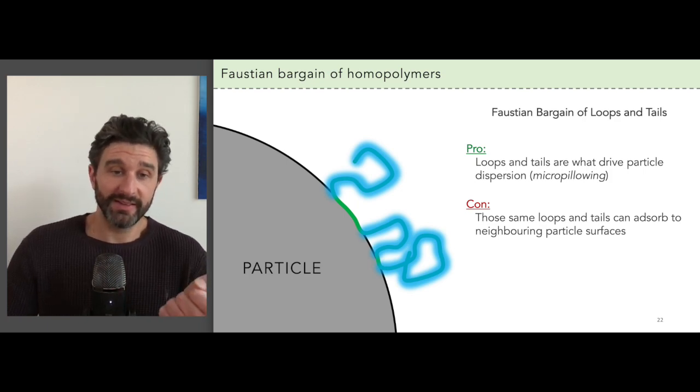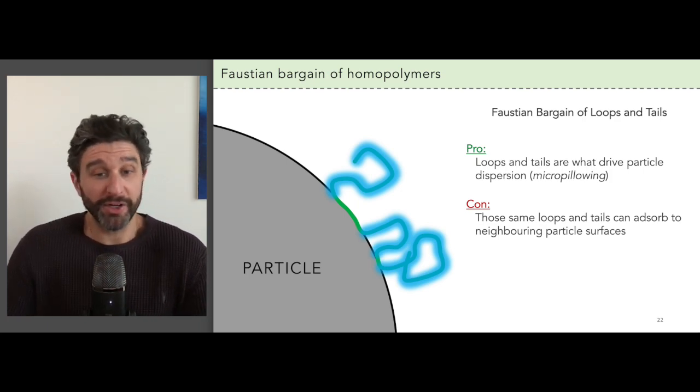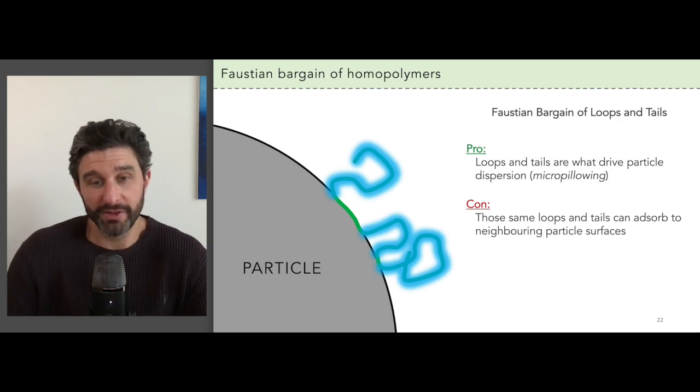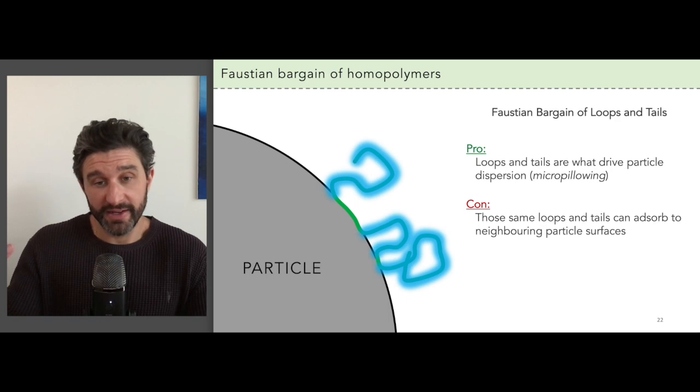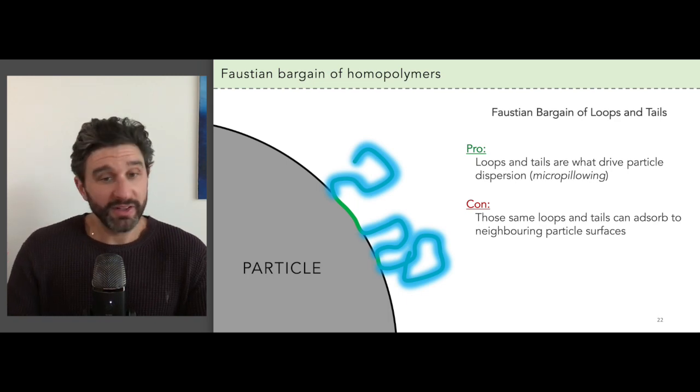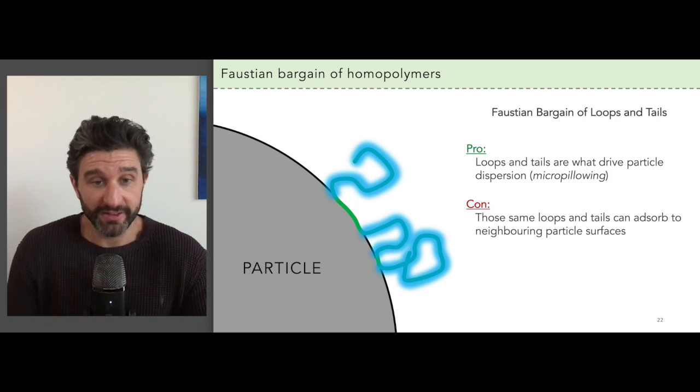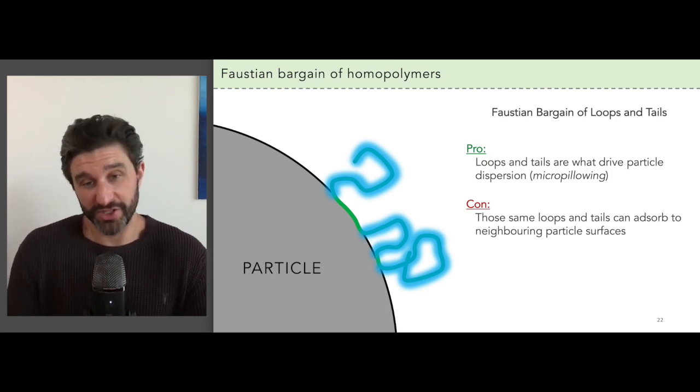So on the plus side, it's the loops and tails that provide the micropillow functionality. It's why polymers work so well as dispersants. But on the negative side, the same loops and tails actually want to absorb two particles. And so they can readily form bridges and cause bridging flocculation.